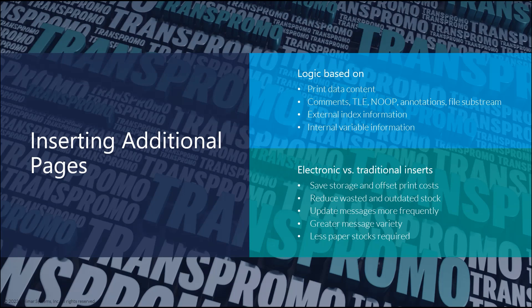This can be based on information extracted from the print data, including metadata or comments, or obtained from external sources. For example, if the information to trigger particular inserts is based on credit card purchases, the transactions could be extracted to an external file where a process calculates what insert is best suited for that recipient. The information is then imported back into the processing rules and matched up with the proper inserts.